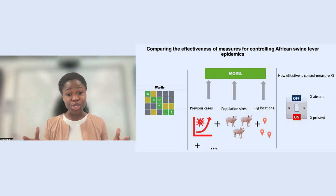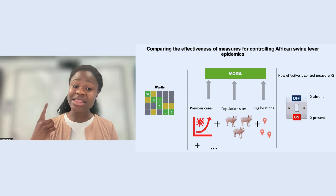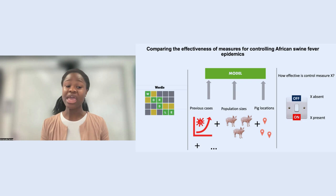We designed a model which included information on various factors which could influence transmission. For example, we included information on the length of a typical ASF infection, the number of cases that had already been reported in the epidemic, and the locations of the pig populations we studied. Then, we built into the model the control measures we wanted to compare.